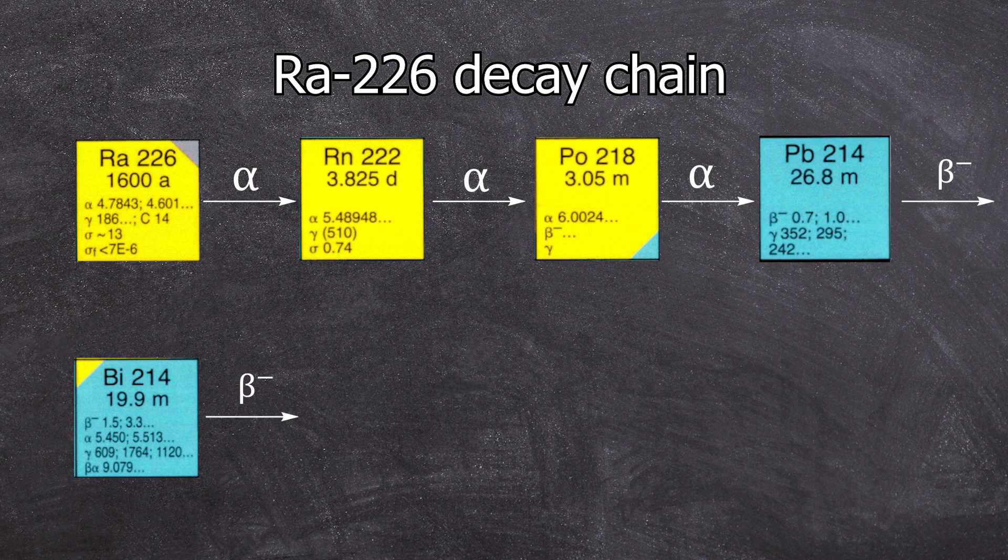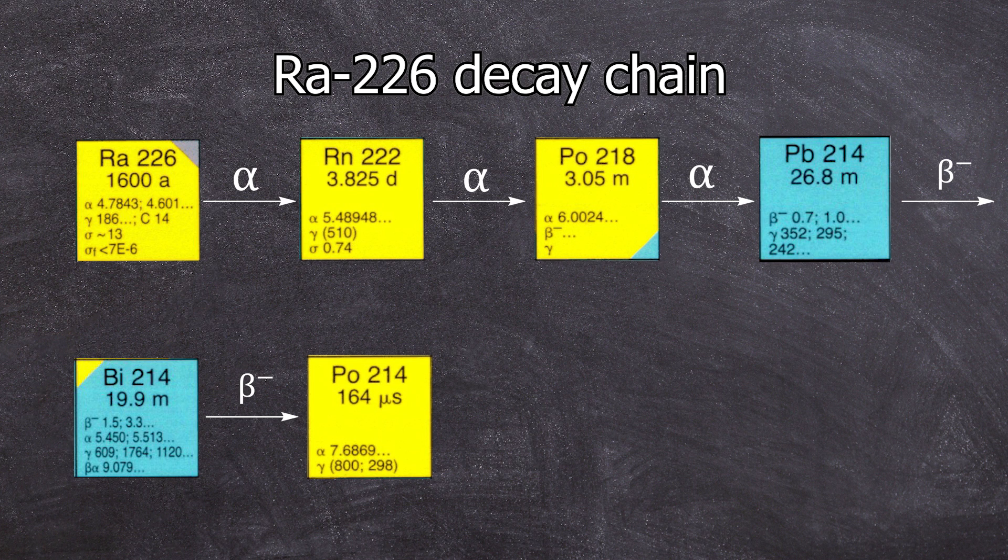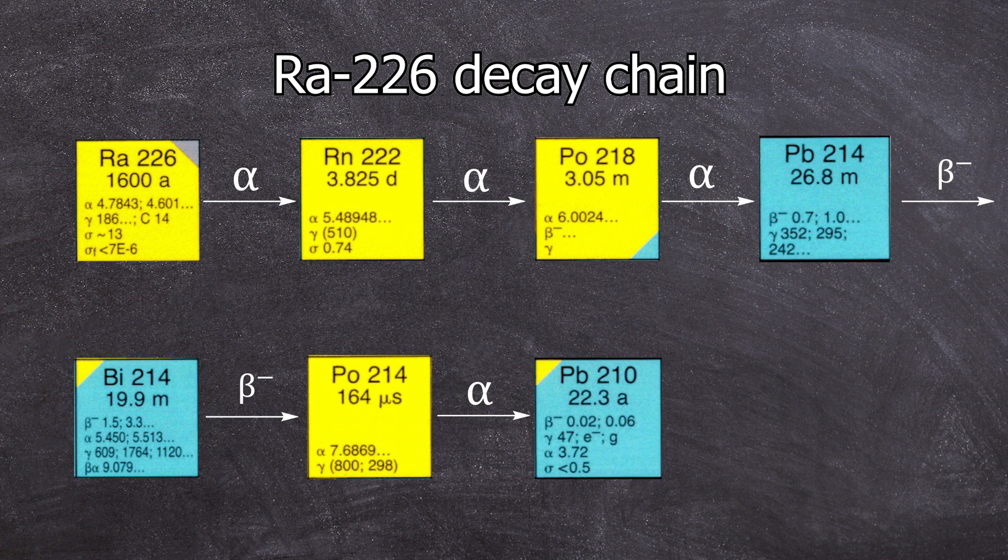We also don't see the following bismuth-214 because it also decays via beta-minus decay. However, bismuth-214 decays with a half-life of 20 minutes into polonium-214, which is an alpha emitter and is visible in the alpha spectrum.